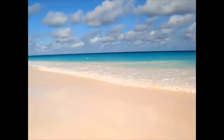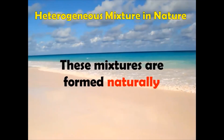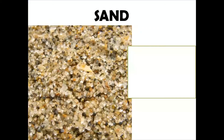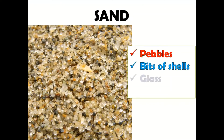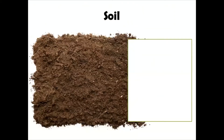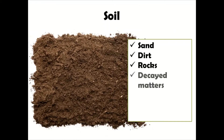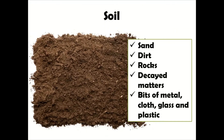We can easily see heterogeneous mixtures in nature because these are mixtures formed naturally. For example, sand is actually made up of pebbles, bits of shells, glass, and pieces of iron. Another example is soil, which is made up of sand, dirt, rocks, decayed matter, and bits of metal.